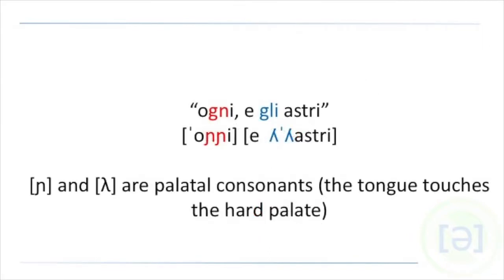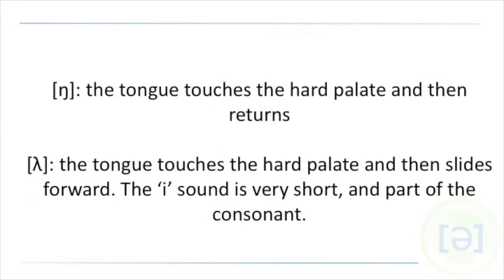And this gli astri and ogni, these are palatal consonants. They're made in the same position. Both the N and the L here are made with that big fat part of your tongue. The tongue touches the hard palate further back. With GN, the tongue touches the hard palate and then returns.